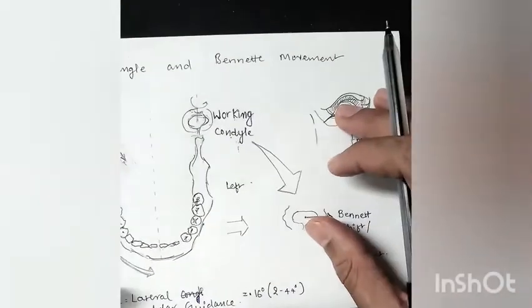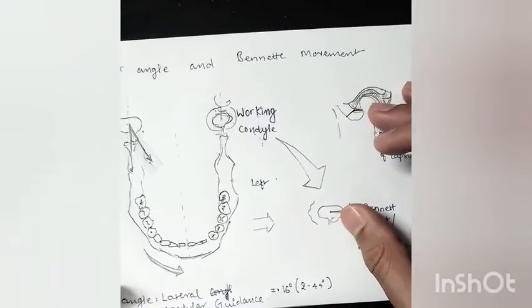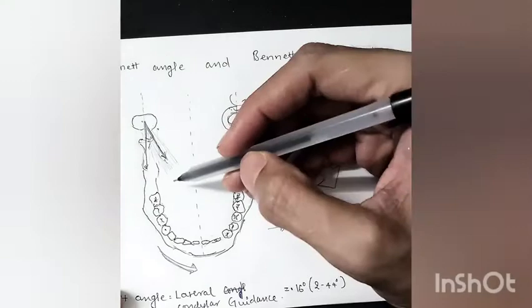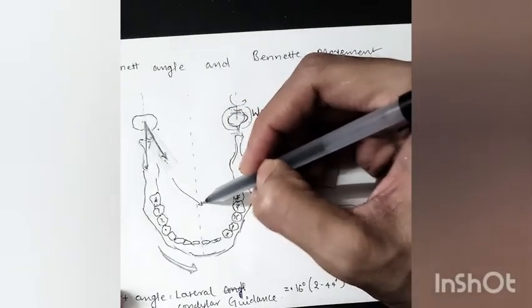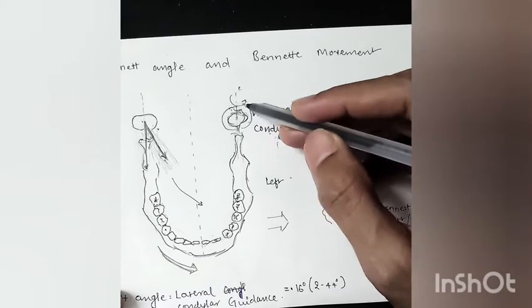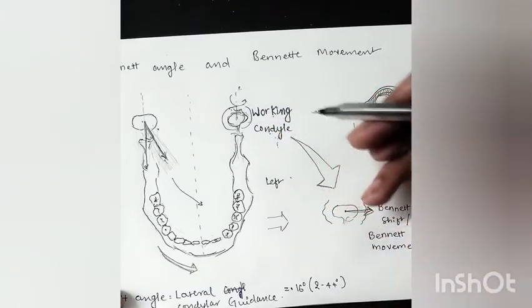In the same scenario when the mandible moves in the left direction, this will be the path of the mandible. The non-working condyle will just rotate on its axis.